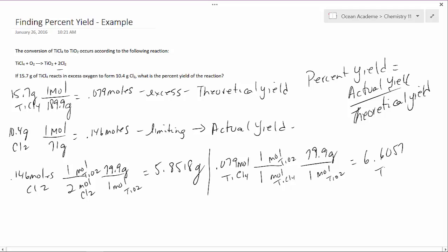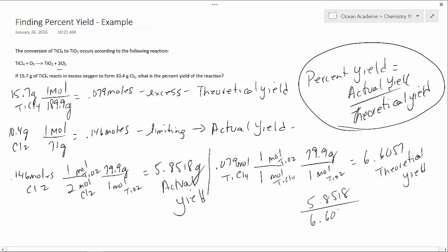So that's our theoretical yield, and this one was our actual. Now we look back to our equation. Our actual yield was 5.8518 and we're dividing that by our theoretical yield which is 6.6057. Dividing this we get a percent yield of 88.6%.